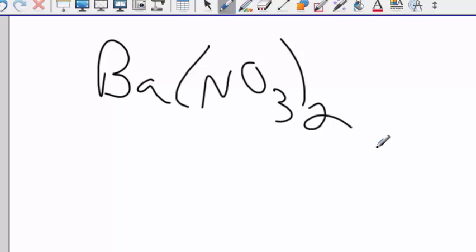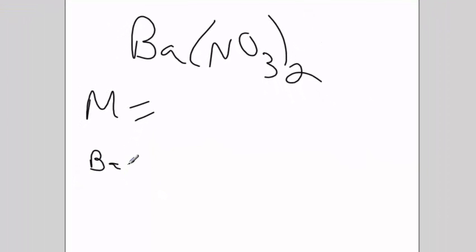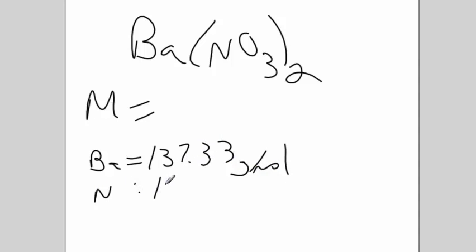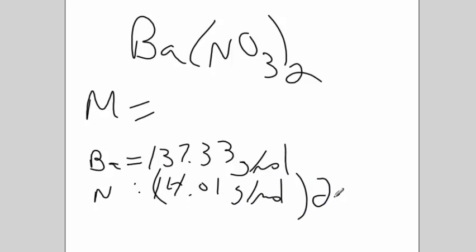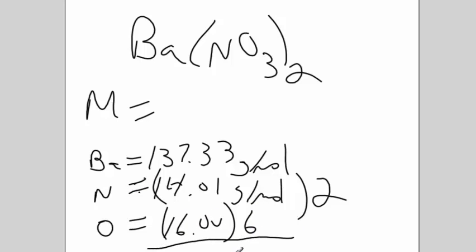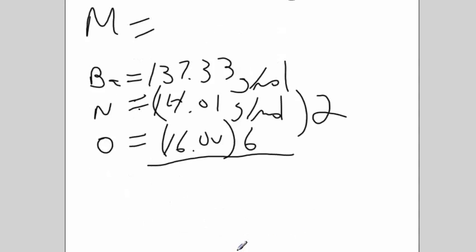The whole, in this case, would be the molar mass. So barium is 137.33 grams per mole. Nitrogen is 14.01 grams per mole, but there's two of them. And oxygen is 16.00 grams per mole, and there's six of them. So if I add all that up, I get 261.35. That's the molar mass.